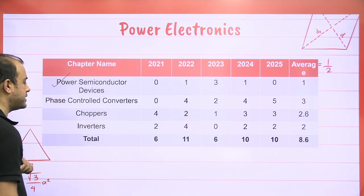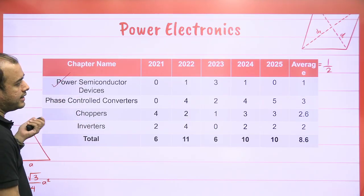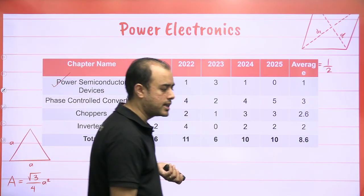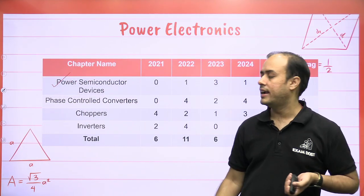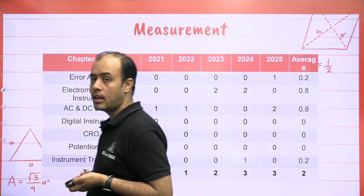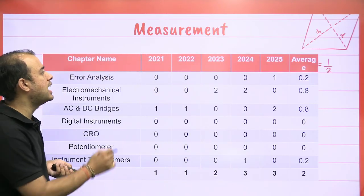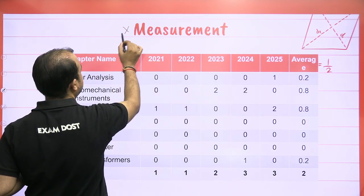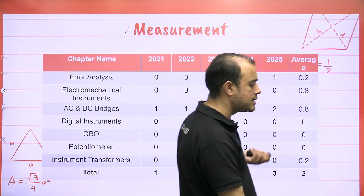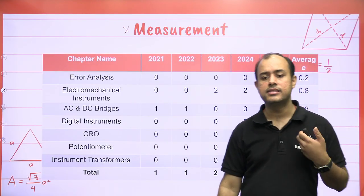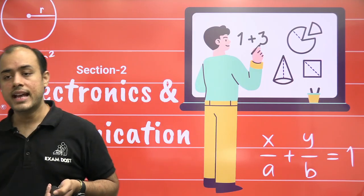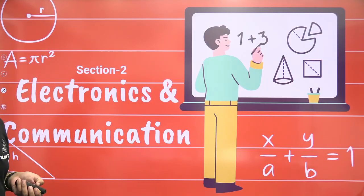In Power Electronics, skip Power Semiconductor Devices; the rest of the chapters are important. You can cover Power Electronics through my crash course. In Measurement, skip the entire subject if not covered yet because the weightage is only 2 marks, so it is not worth pursuing this subject.